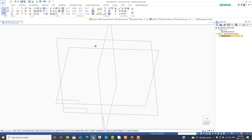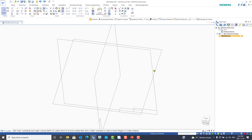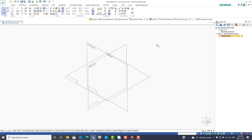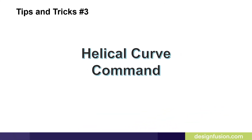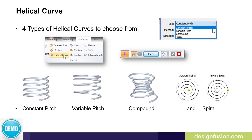The debate over the advantages of each paradigm goes on forever, but the goal is simply to show how to use these features in both ordered and synchronous. Tips and tricks number three is the Helical Curve command. Some of you may not be aware of this because it's found on the Surfacing tab in the Curves group. You have four types of helical curves: constant pitch, variable pitch, compound, and spiral. In combination with feature commands such as Sweep, you can use this to make some complicated shapes.